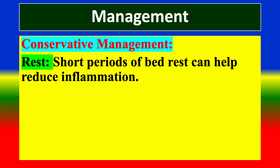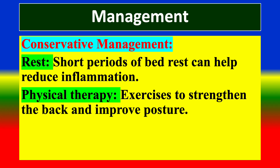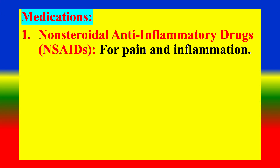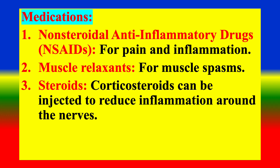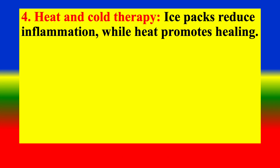Conservative management includes: Rest — short periods of bed rest can help reduce inflammation. Physical therapy — exercises to strengthen the back and improve posture. Medications — non-steroidal anti-inflammatory drugs for pain and inflammation, muscle relaxants for muscle spasms, and corticosteroids which can be injected to reduce inflammation around the nerve. Heat and cold therapy — ice packs reduce inflammation while heat promotes healing.